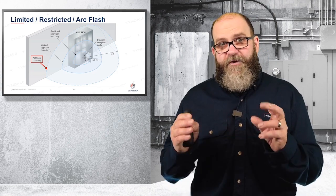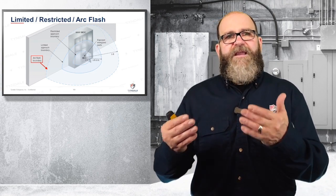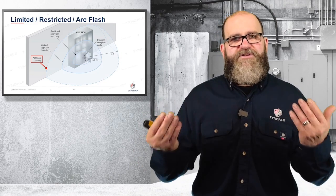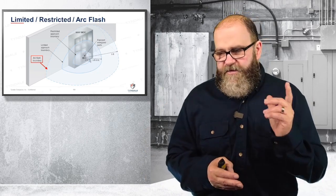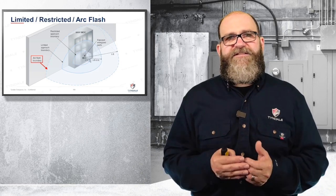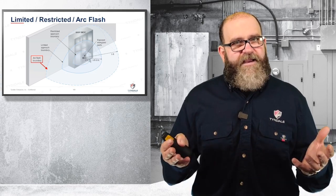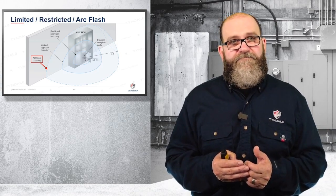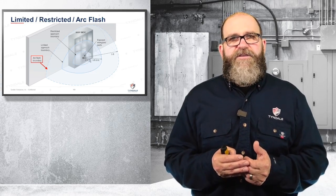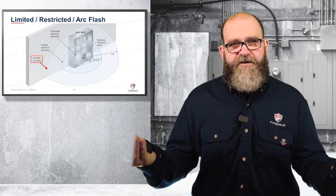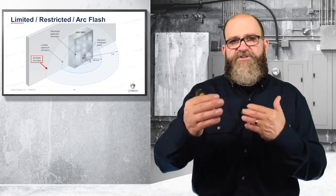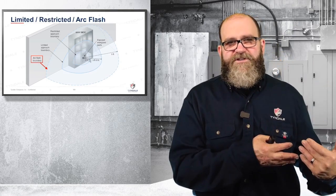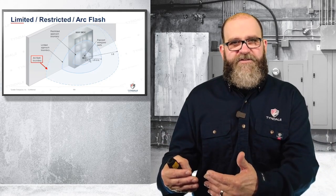So if your arc flash boundary, the imaginary line, is at nine inches and your limited approach is at 42 inches, you will be setting your physical barricade at 42 inches. Now, the same MCC — let's say your limited approach boundary is at 42 inches and your arc flash boundary is at 65 inches. You are going to set your physical barricade at your arc flash boundary. You're never going to be less than the greater of those two. The arc flash boundary or the limited approach boundary — whichever one is bigger, that's where you set your physical barricade.